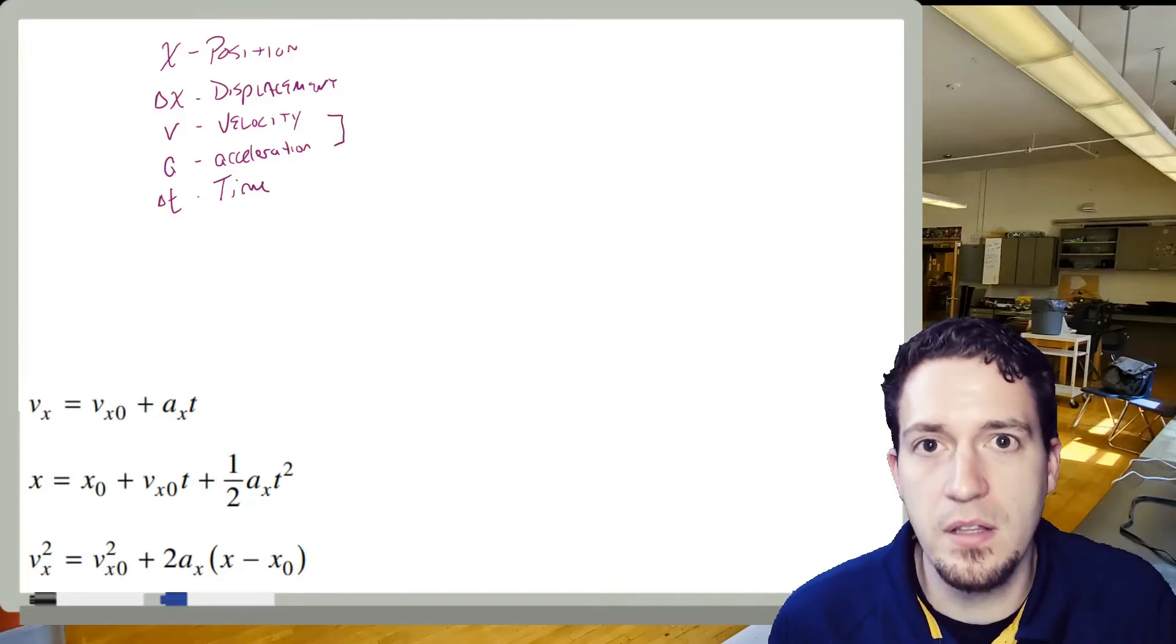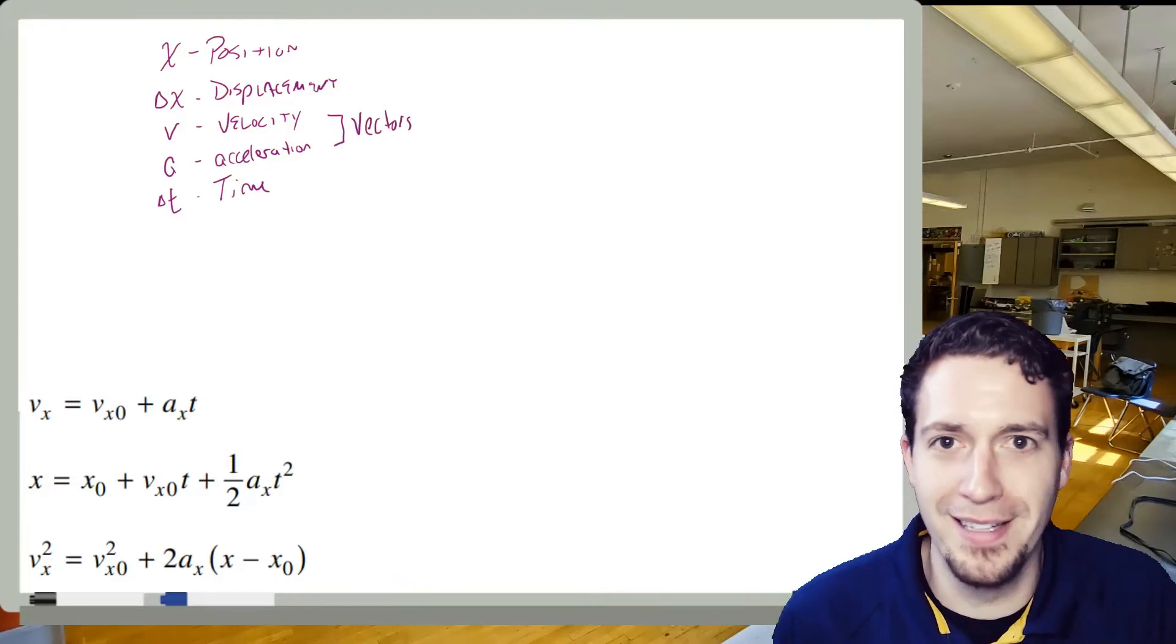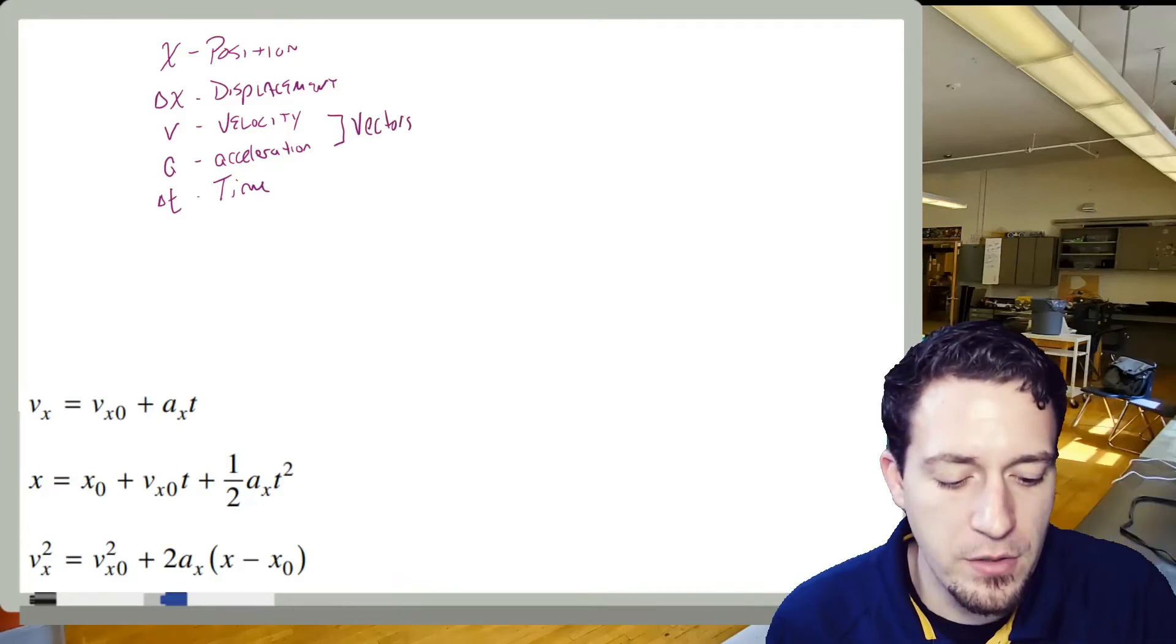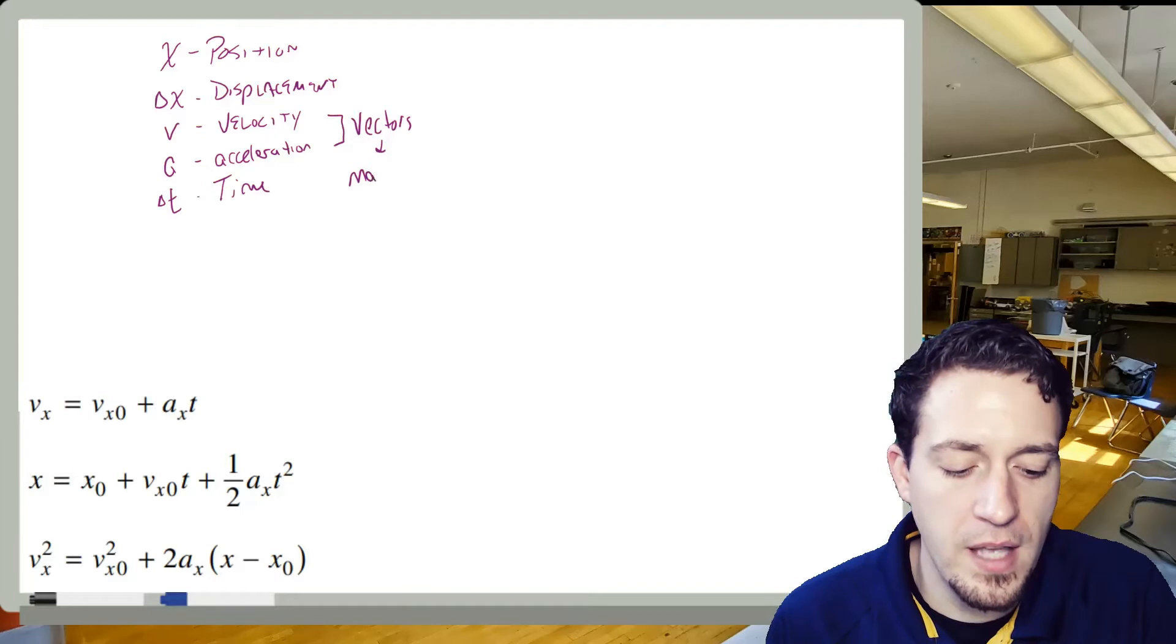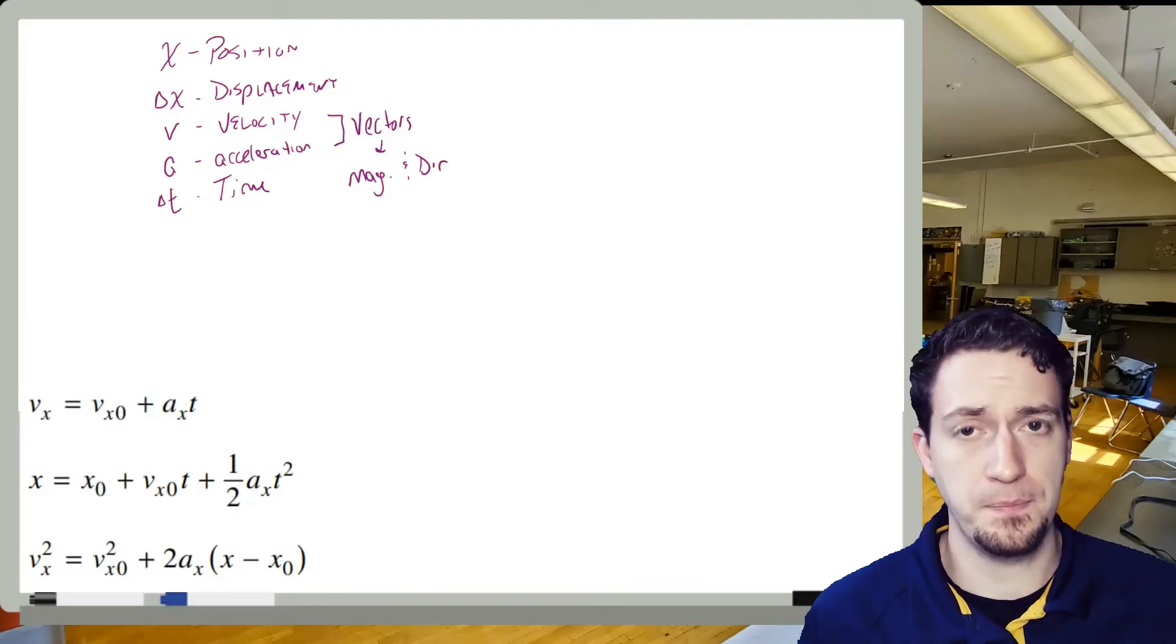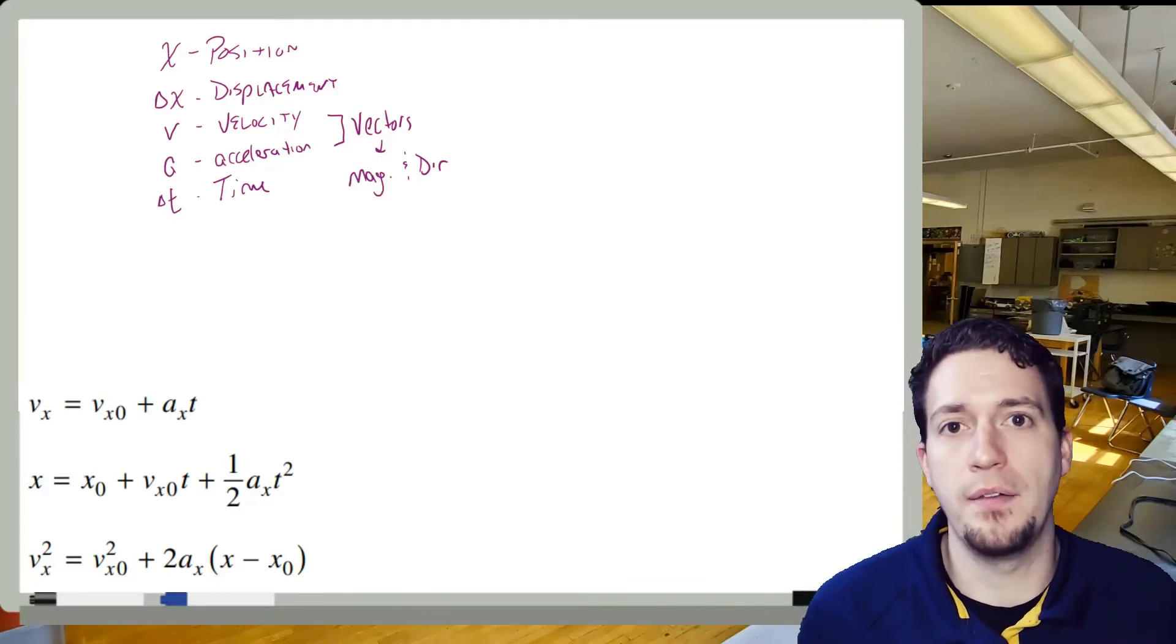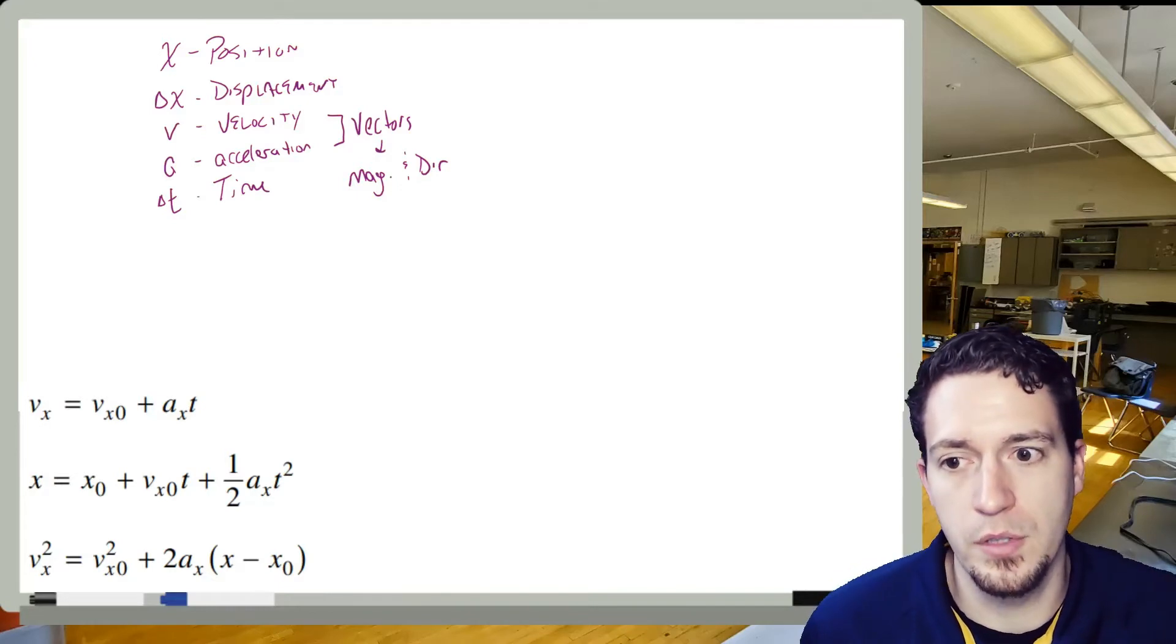Now, acceleration and velocity, those things are both vectors. And I mean, that's a whole other video in itself. But vectors just basically mean two things that they have both magnitude and direction going on with them. So it's not just the number value of them. It's also whether or not they're left or right, that is also important to us.